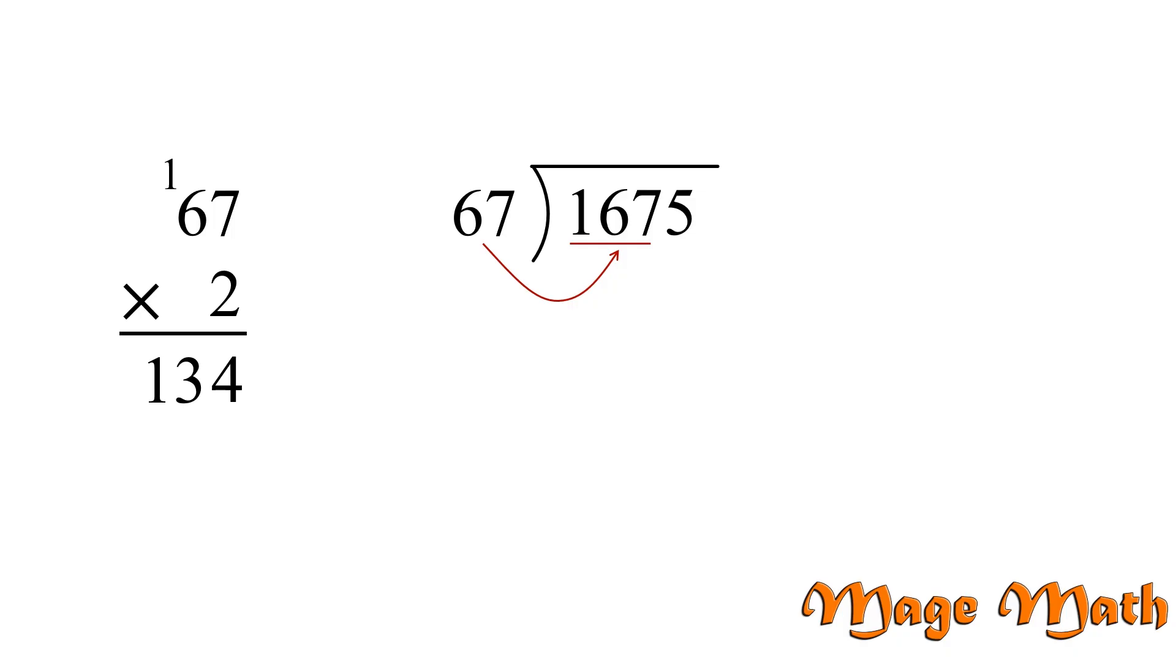Great! Let's see what we get when we use 2 in our division problem. 67 goes into 167 2 times, and we get 134. Now, we want to draw a line and subtract. 167 minus 134 is 33. Because 33 is less than 67, we found the greatest number of times 67 goes into 167 without going over.